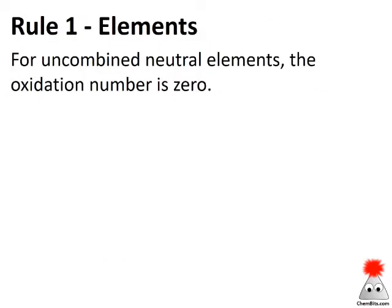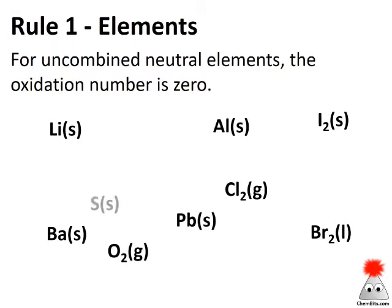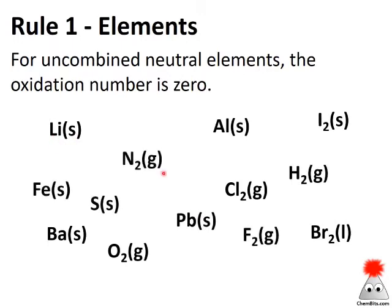Let's take a look at some examples and work through the rules. Rule number one: for uncombined neutral elements, the oxidation number is zero. It doesn't matter what the element is — it doesn't matter if it's a metal or a diatomic element like nitrogen, chlorine, or hydrogen. For uncombined neutral elements, the oxidation number is zero, just like charge.